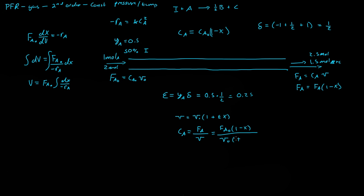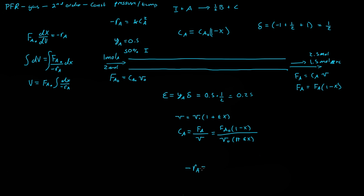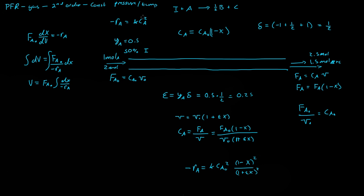We can plug this expression for CA into the rate law. Since FA₀/V₀ = CA₀, the negative reaction rate becomes -rA = k · CA₀² · [(1 - X)/(1 + εX)]², because this is a second order reaction in CA.